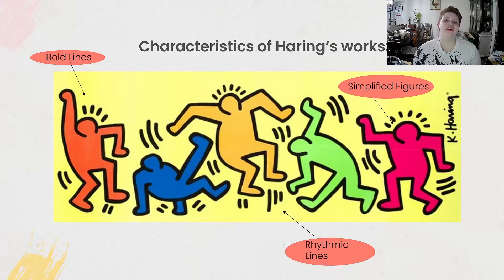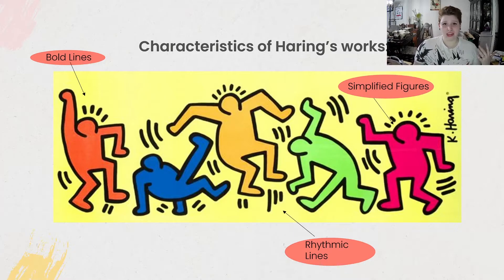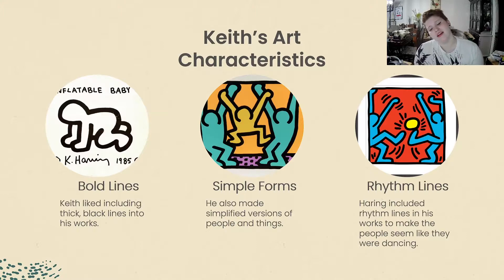To break down some of his work, the characteristics of Haring's pieces include really bold lines, which made the artwork pop. He also included rhythmic lines added to the sides of figures that made them look like they were moving and dancing around. He also included simplified figures — very stylized shapes. Those bold lines drew attention because the bolder the line, the more it pops out. The simple forms were stylized, meaning he took what something looked like normally and constructed it in a way he enjoyed.